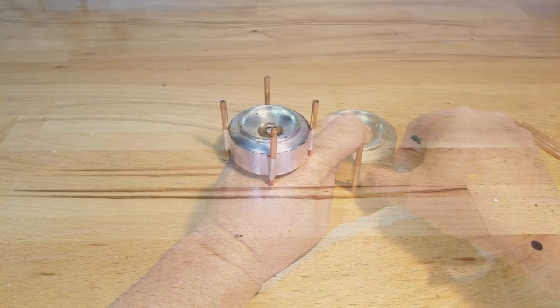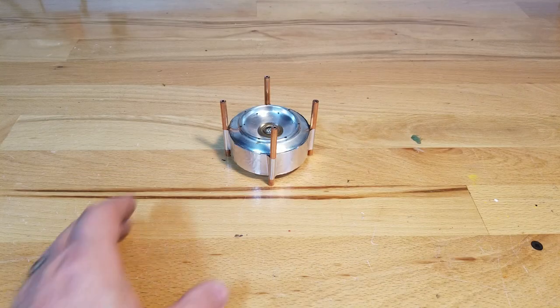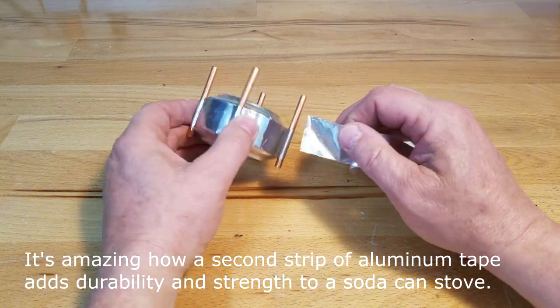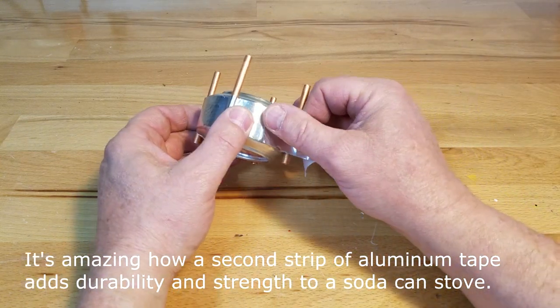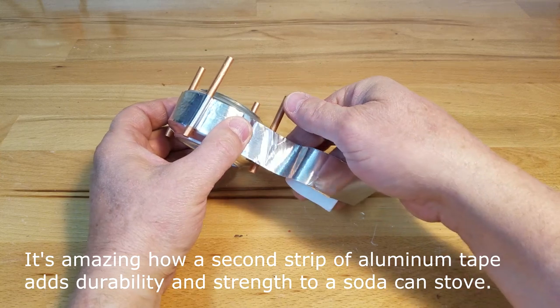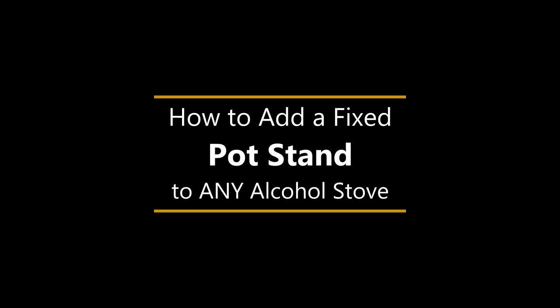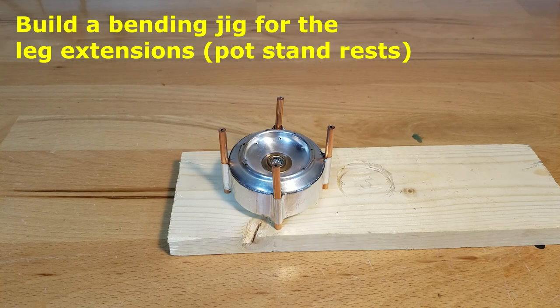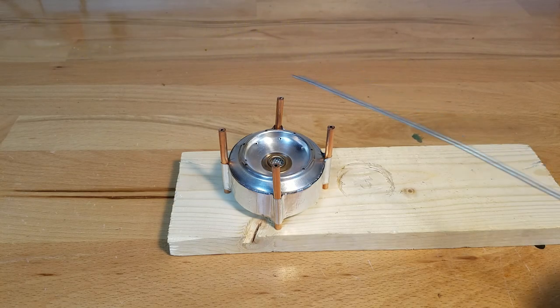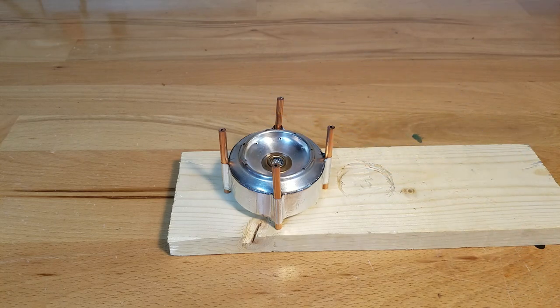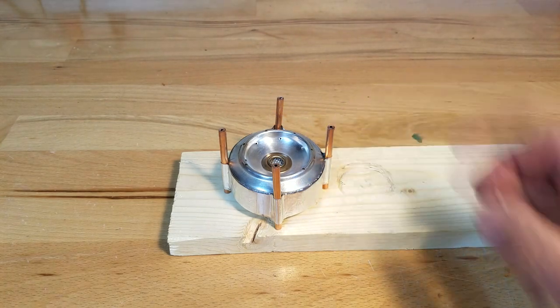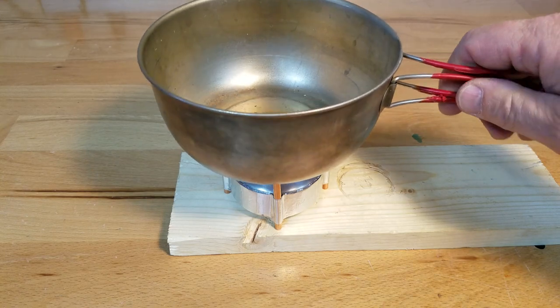For added durability, take the second strip you've cut and apply it over the top of the first strip, adding rigidity to the whole design. Now it's time to make the leg extensions. This is optional, as this height works just as well for a camping stove.